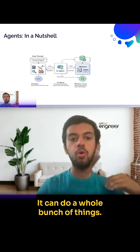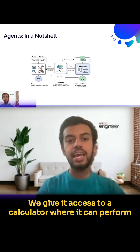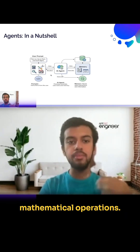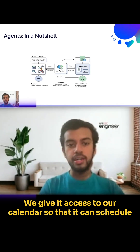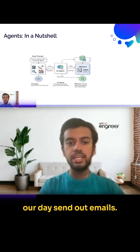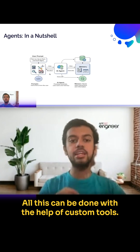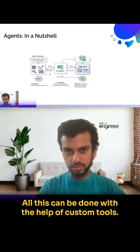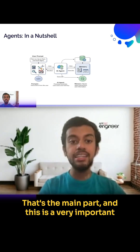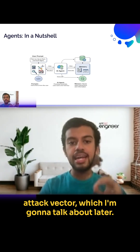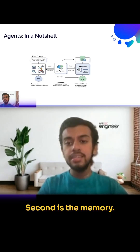We give it access to a calculator where it can perform mathematical operations. We give it access to our calendar so that it can schedule our day and send out emails. All this can be done with custom tools — that's the main part. And this is a very important attack vector, which I'm going to talk about later.